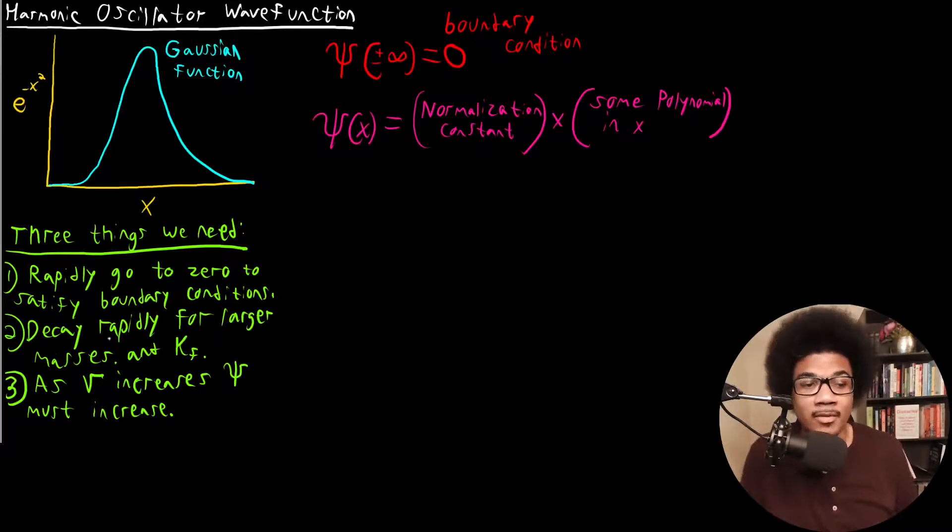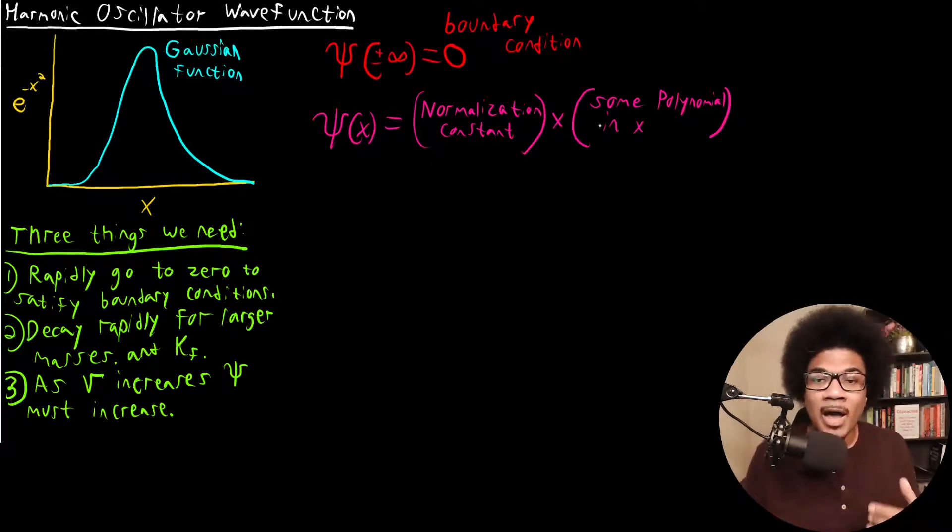The polynomial will help us to be able to solve the second thing that we need to do. We need a wave function that decays rapidly for larger masses. So we'll need something, some polynomial that tracks with the mass of our particle. So this is going to be some polynomial in X, and the last piece is going to be a Gaussian function.